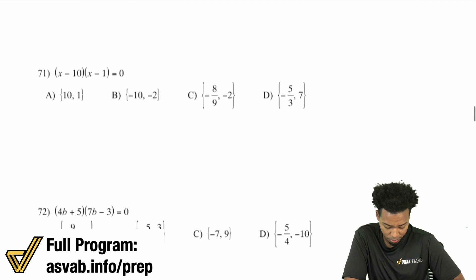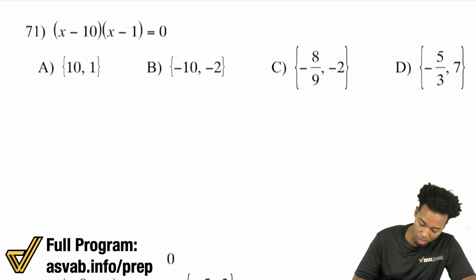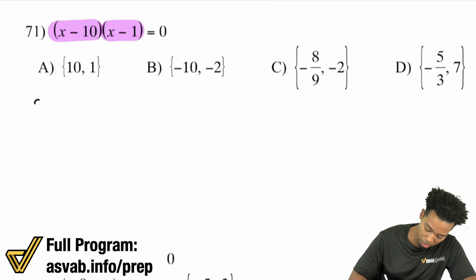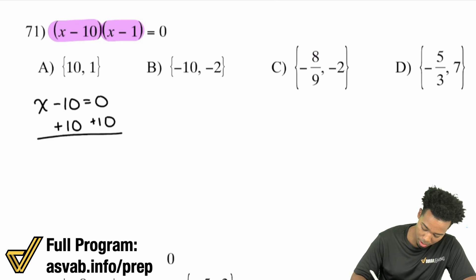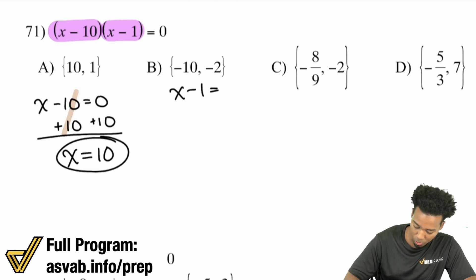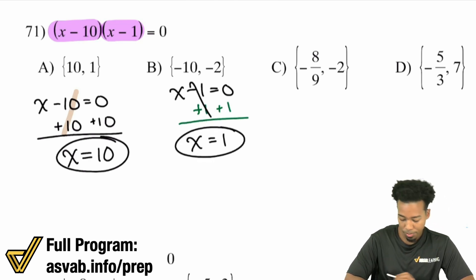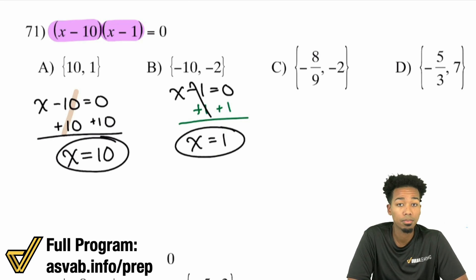I'll go through one more and we're done. Again, we have a zero on the right side, so we're good to go. Either this is zero or that is zero — set them each equal to zero. I'll add 10 to both sides, giving us x equals positive 10. And the other side: x minus one equals zero. We simply add one to both sides, giving us x equals positive one. So the answers are positive one and positive 10. Both of those are answers. They both work.